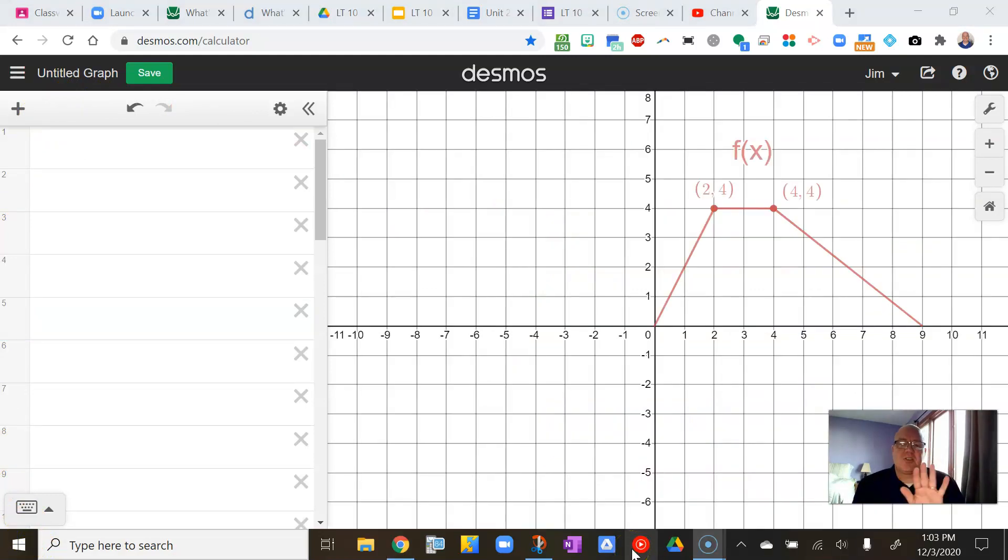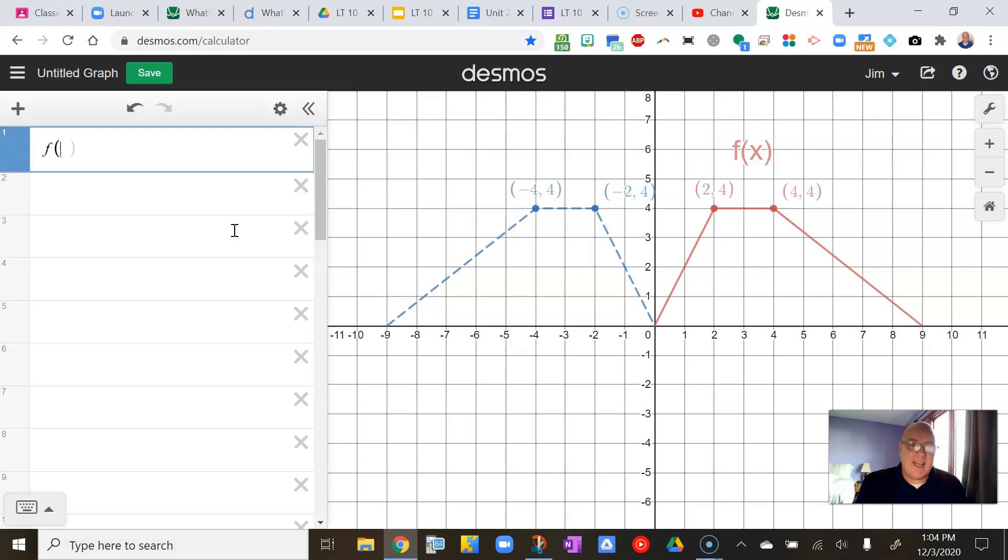Let's take a look at one more reflection, which is going to be a reflection about the y-axis. Here I have this same graph, f of x, but now it's been reflected about this vertical axis right here, the y-axis. So if we look at the points, we can see that the point 2, 4 has now become the point negative 2, 4. And the point 4, 4 has now become the point negative 4, 4. So what's happening here? Well, what's happening is the x-values are getting negated. So in my new function, I can simply, instead of negating the function itself, I'm going to negate only the x-values. So I'm going to put a negative x inside my f notation, and that ends up negating all the x-values. And as a result, I get a graph that is reflected about the y-axis.